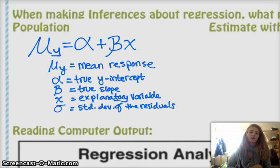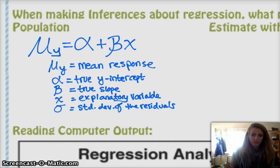So here are the majority of our population parameters. We have mu sub y is the mean response, alpha is the true y intercept, beta is the true slope, x is the explanatory variable, and then sigma is the standard deviation of the residuals. And then, you're going to be estimating all of those things with essentially your sample, the values that you get in your sample. The mean response is really your y hat, is what we're estimating with.